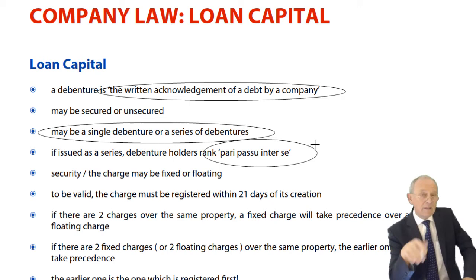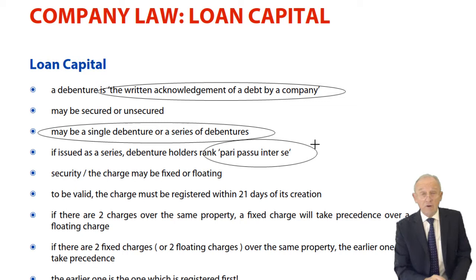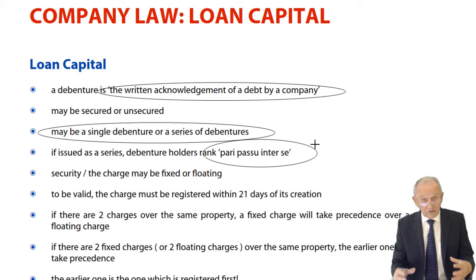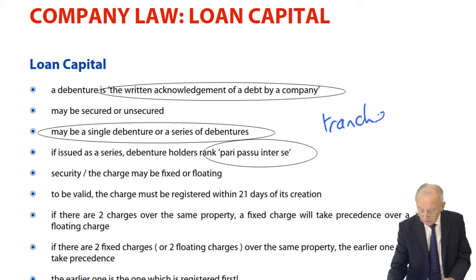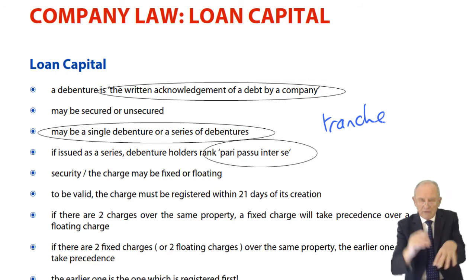Just because one debenture holder is called Adams and another Zulu doesn't mean Adams is any better than Zulu. In the event of a liquidation where not all debts are paid in full, all debenture holders on a single tranche rank equally. There is no preferential treatment according to alphabetical sequence, age, or ability. They rank pari passu — equally amongst themselves.